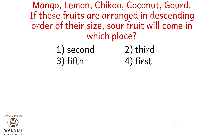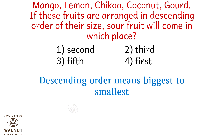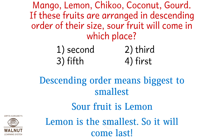Mango, Lemon, Chikku, Coconut, Gold. If these fruits are arranged in descending order of their size, in which place will the sour fruit come? Descending order means biggest to smallest. The sour fruit is lemon, which is the smallest, so it will come last — option three, fifth.